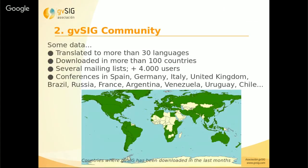GBC Desktop is translated to more than 30 languages, all by volunteers. It is downloaded in more than 100 countries. There are several mailing lists — the main ones are for users and developers, in English and Spanish. There are also mailing lists for different communities, for example Italian, Brazilian, Argentinian, and more.